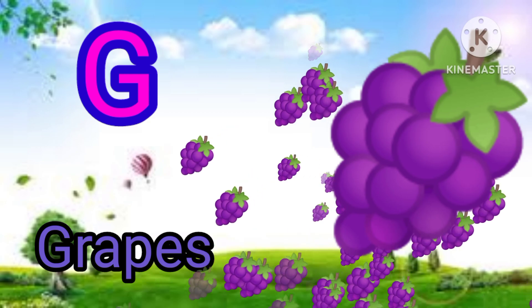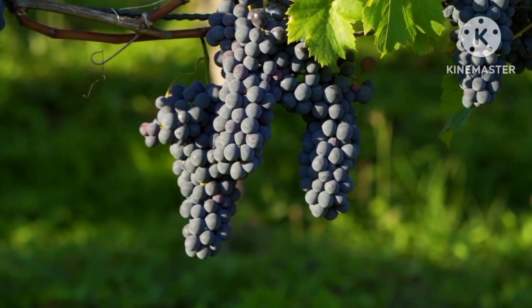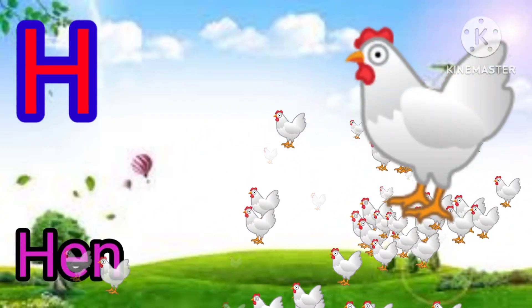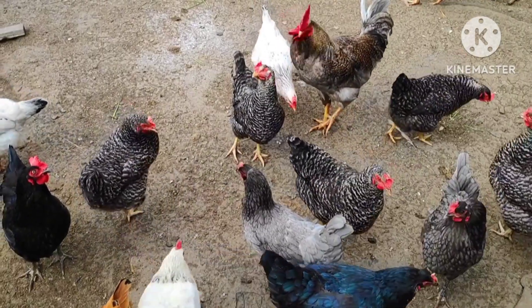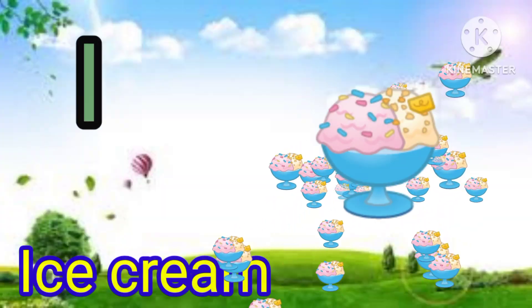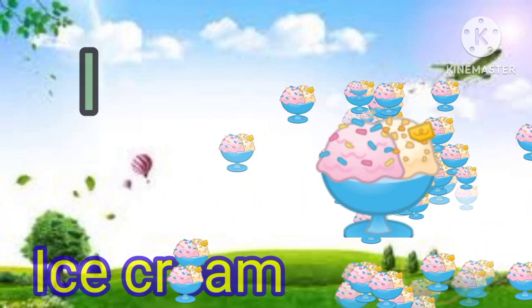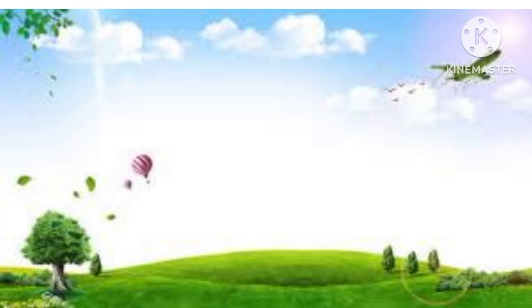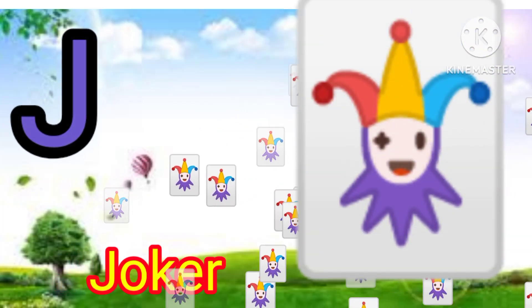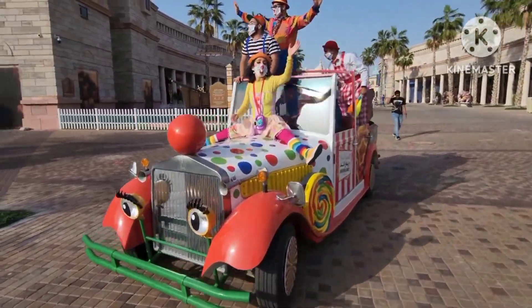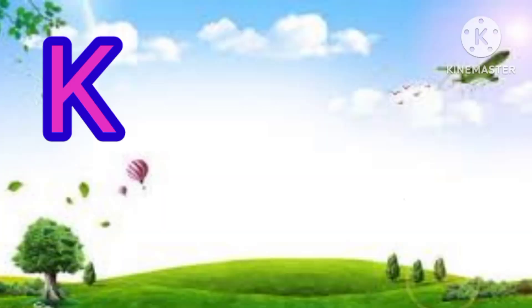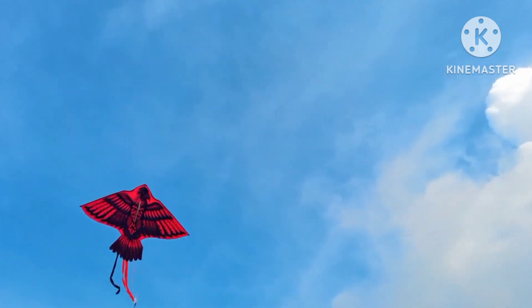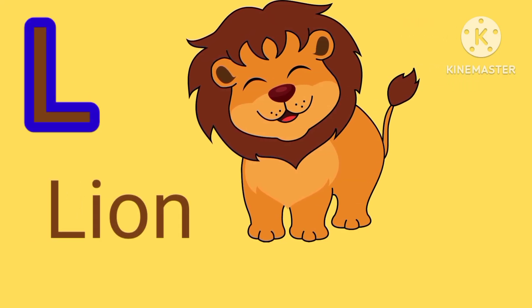G for grapes. H for hen. I for ice cream. J for joker. K for corn. L for lime.